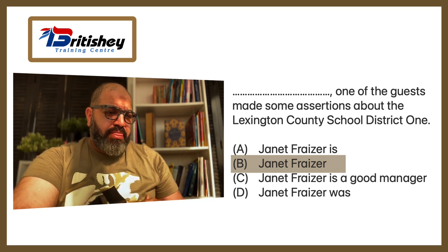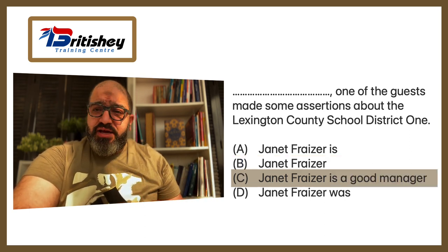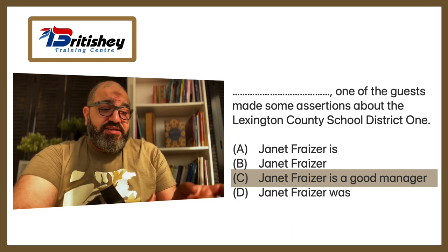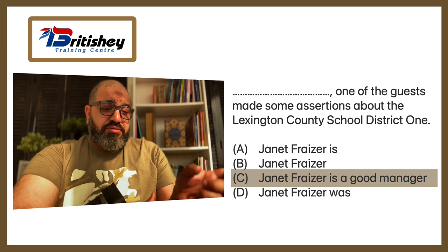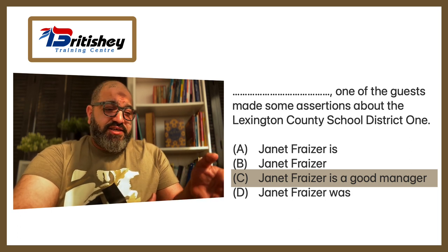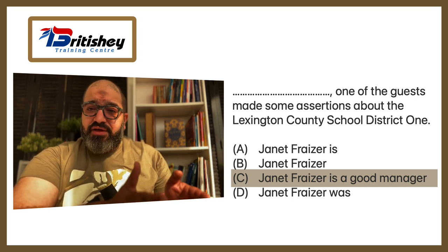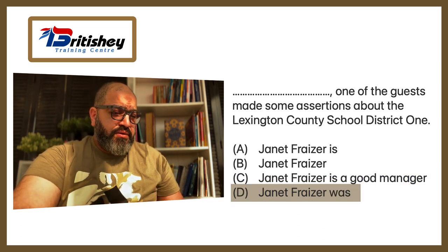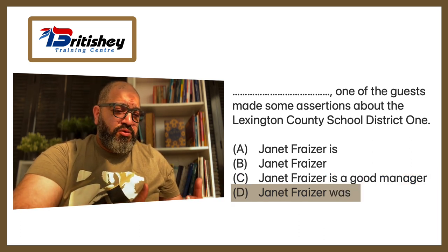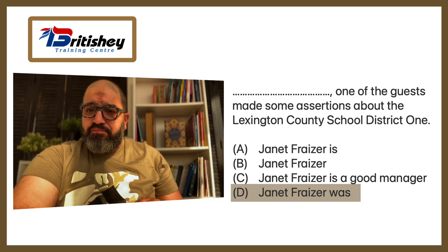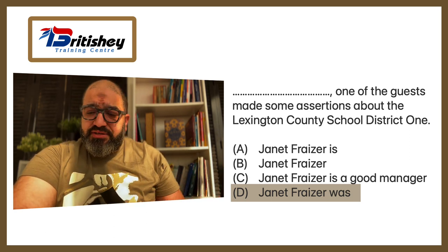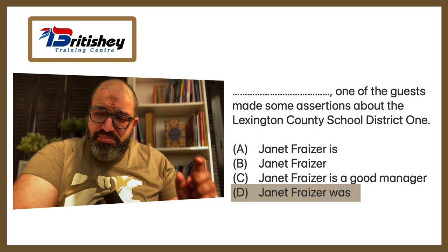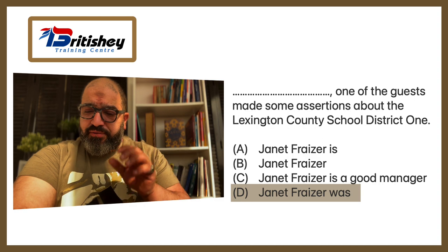Let's move to option C: 'Janet Fraser is a good manager.' That's also a bad option because yes, we've got a complete sentence, but what would I do with this complete sentence without a connector? I can't put two sentences together without a connector. And then option D: 'Janet Fraser, who is' — it's the same as option A. First, it is incomplete. Second, it is a subject and a verb, and I don't need a subject and a verb. I need an appositive here because I already have a subject and a verb.